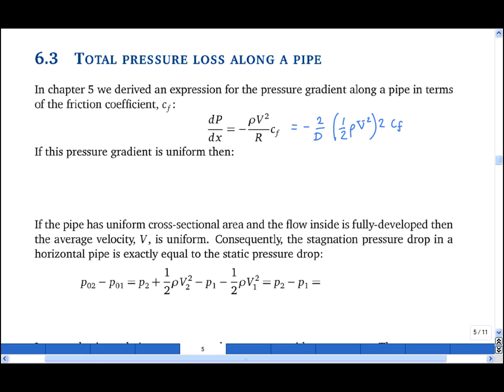Now, if dp by dx is uniform along a pipe of length L from pressure 1 to pressure 2, then dp by dx is p2 minus p1 upon L is equal to minus 4 upon d Cf times a half rho v squared.